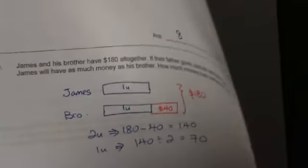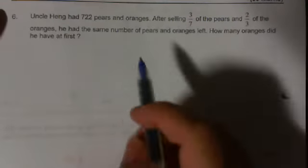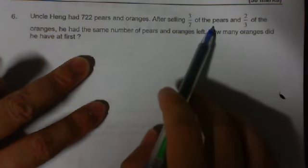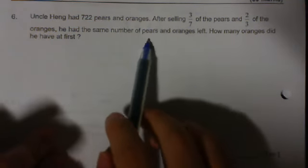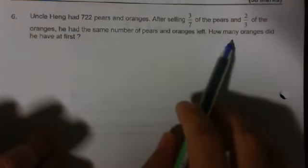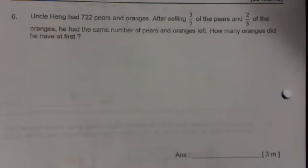Next, we're moving backwards, we're moving to question 6. Uncle Hing had 722 pears and oranges. After selling 3/7 of the pears and 2/3 of the oranges, he had the same number of pears and oranges left. How many oranges did he have at first?